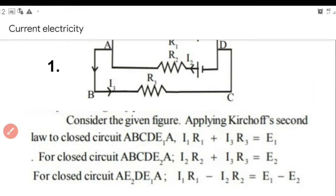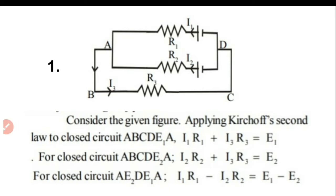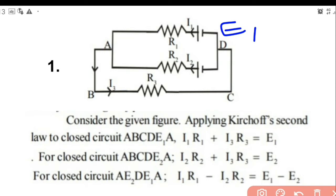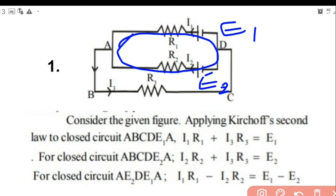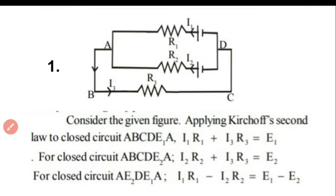So we have the first example — a simple circuit. Here we have two resistors R1 and R2, and two cells E1 and E2. We can take the first loop, which is the closed loop ABCD. Starting from A, going through the loop A, B, C, D, then E1, and back to A — that is a closed loop.